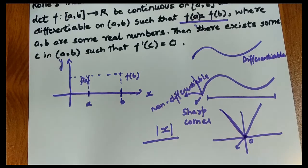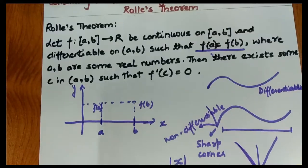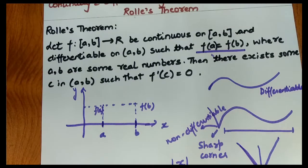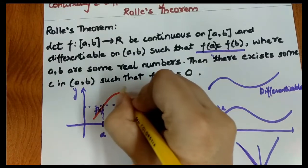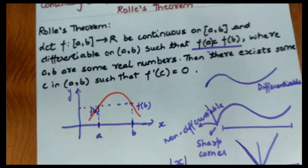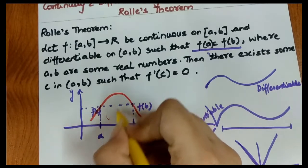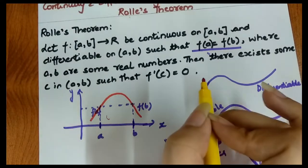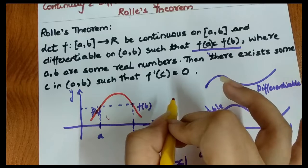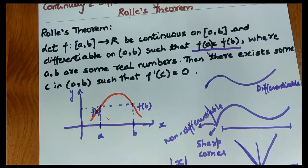So in Rolle's Theorem, if our function is continuous on [a, b], it means there is no break point. And differentiable on (a, b) means there is no sharp corner or edge. So the graph can be smooth and curved in either direction — up or down — as long as it has no sharp edges and is continuous.